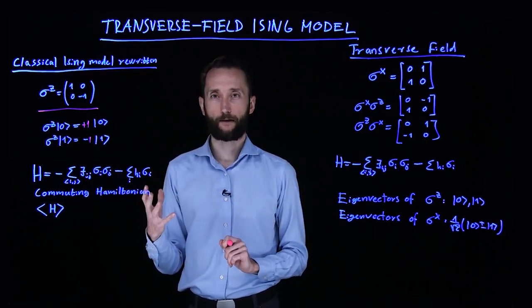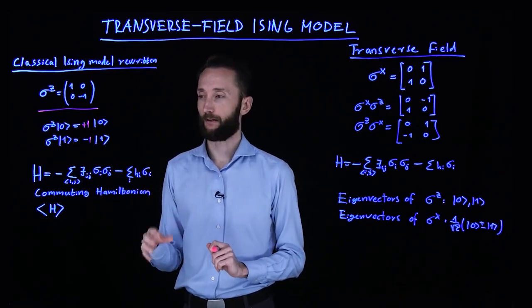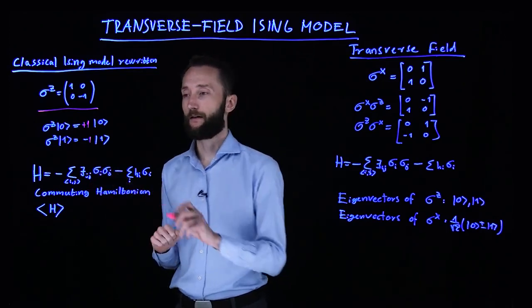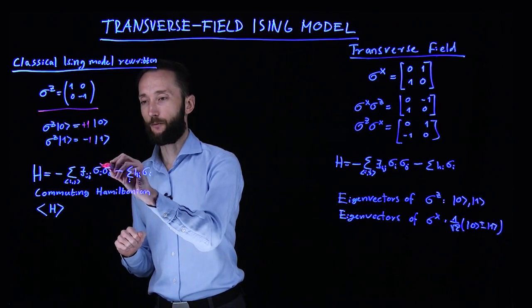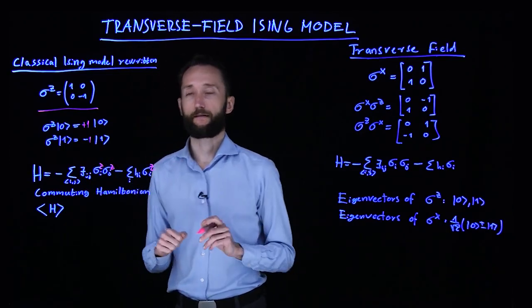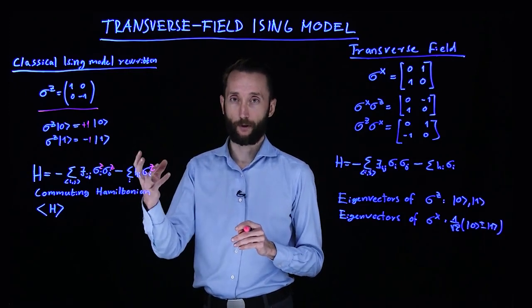The quantum mechanical form of the classical Ising model is exactly the same as what we have seen, except that we have operators here. Now all of these are sigma z operators acting on a particular qubit.